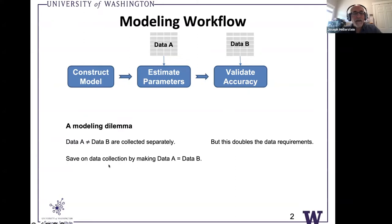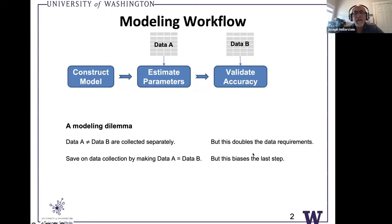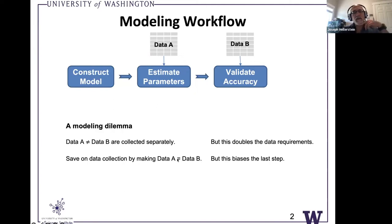We can save on data collection by making dataset A equal to dataset B. Now we have a lot more data available, but now we've got a different problem — we've got some bias because we're validating with the same data we used to essentially train the model. Estimating parameters is really a kind of training. So it's sort of like being the judge and the jury — we've got a bias over there. The technique I'll describe today called cross-validation is really intended to give us a third choice: we can use all of the data, but in a judicious way so that we don't end up with this bias where we're doing our validation on the same data where we estimated parameters.